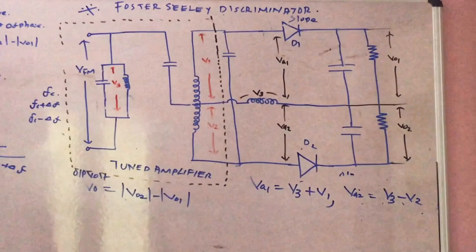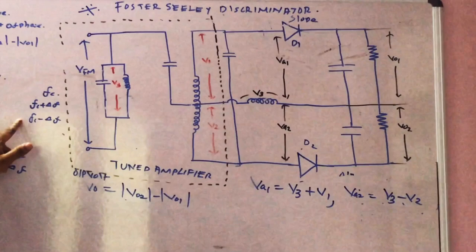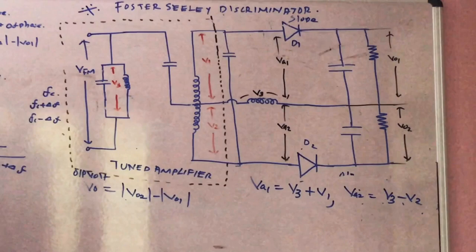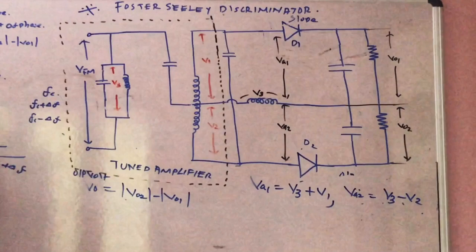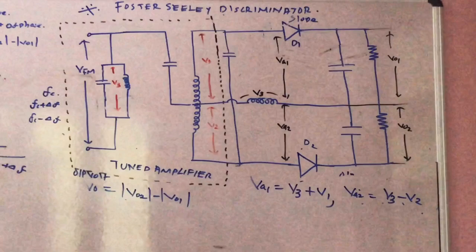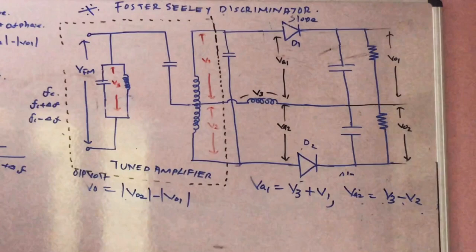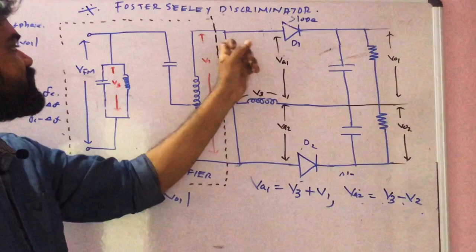When we have input frequency, we generally have three frequencies: one is Fc, one is Fc plus delta F, and one is Fc minus delta F. The input frequency is equal to the carrier frequency. In this example, we have a carrier at 100 Hz, 120 Hz as Fc plus delta F, and 180 Hz as Fc minus delta F. We apply these three frequencies. This is the arrangement of the tuned amplifier circuit.